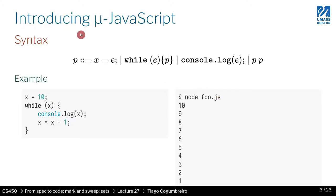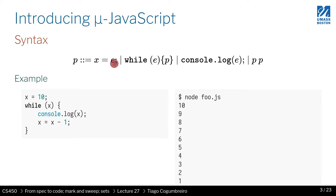I want you to learn a bit of JavaScript. This is just a very basic imperative language. We're not going to handle object-oriented features at this point. We're simply going to implement a very small programming language that has assignments, a while loop, a way to print out values, and a way to sequence instructions.